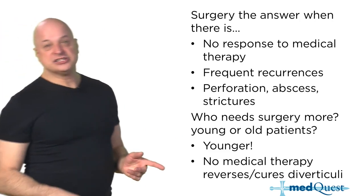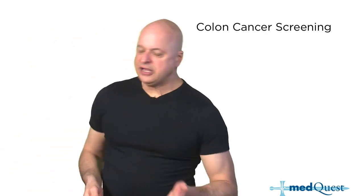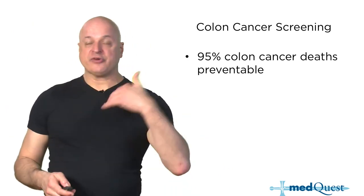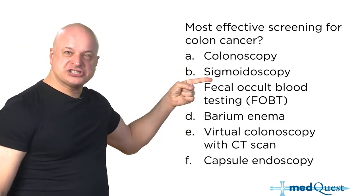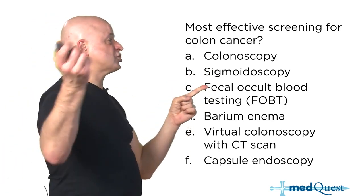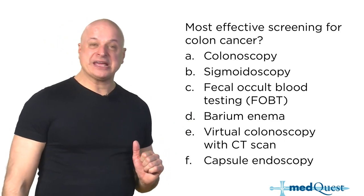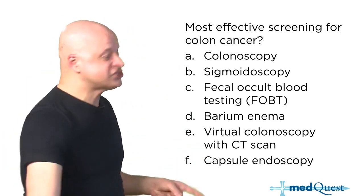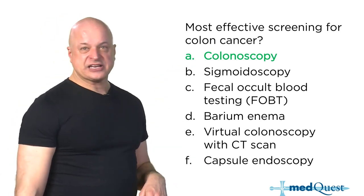The younger person is more likely to need surgery because nothing reverses the diverticuli and they don't want three episodes a year. Colon cancer screening is one of four cancer screening methods that lowers mortality. The standard of care is colonoscopy every 10 years starting at age 50. Sigmoidoscopy misses 40% of proximal lesions. Barium enema is only if you suspect a false negative colonoscopy. Virtual colonoscopy misses small lesions, and capsule endoscopy is a bleeding test, not a cancer screening test.